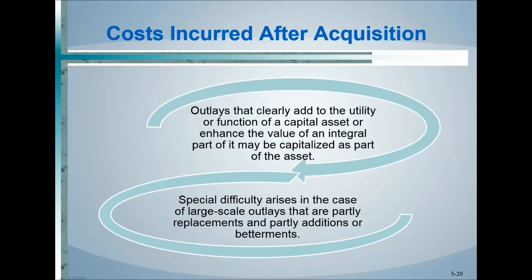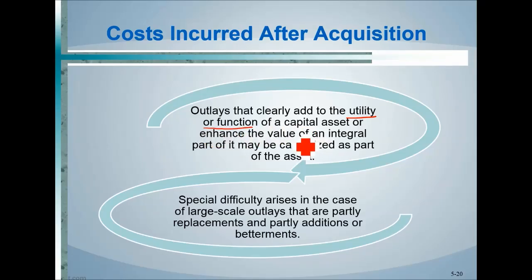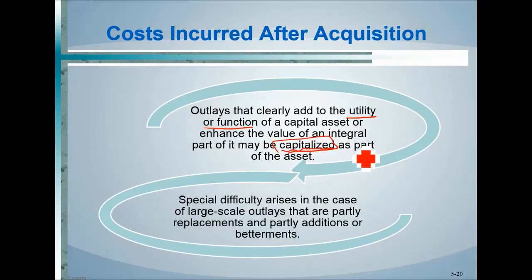Costs incurred after acquisition — such as maintenance — must be evaluated: do they enhance the utility or function of the capital asset? If so, they are capitalized and depreciated. For example, waxing a floor is normal maintenance and not capitalized. But adding a new roof or HVAC system enhances the asset's utility and would be capitalized and depreciated. Normal maintenance costs are expensed as incurred.